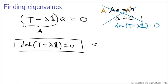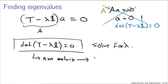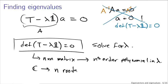This is the equation we solve for lambda to find the eigenvalues. We won't find just one solution: if this is an n×n matrix, this equation is an nth-order polynomial in lambda. Working with complex numbers, an nth-order polynomial has n roots, so we have n eigenvalues. These eigenvalues are not necessarily distinct, but we should have n of them — whatever the dimension of our space.